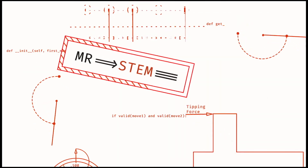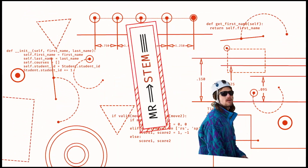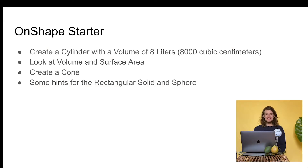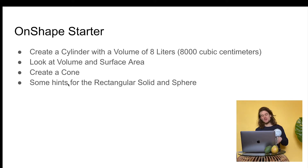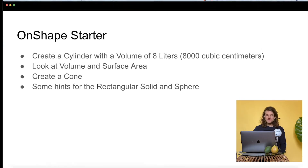Good morning, good afternoon — hope all is great wherever you are. May you be happy and well educated. Let's get into it. Today we're looking at OnShape 3D modeling software. This is kind of a starter video. We're going to make some basic shapes, look at volume and surface area — we'll make a cylinder, a cone, and I'll give you some hints for the rectangular solid and sphere.